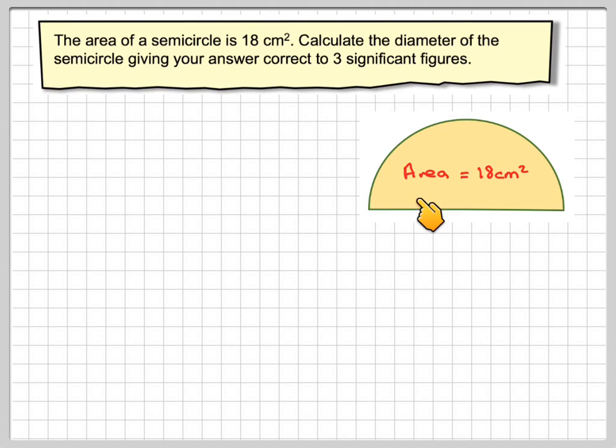So we have a semicircle, its area is 18cm squared, and we have to find the diameter of the semicircle.